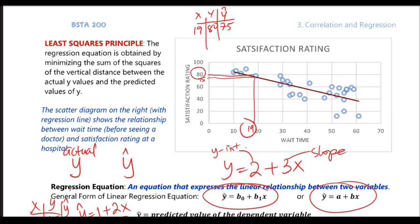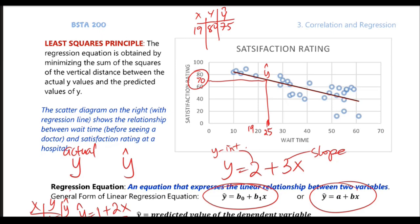For several reasons — sometimes we want to predict something. For example, at 25 minutes on the x-axis, we don't have anybody who actually waited 25 minutes. We can trace that to the line and estimate that a person who waited 25 minutes would rate the doctor's office about 70. So that is your y-hat. You don't actually have someone who waited 25 minutes. That's why we obtain the equation of the line and use it for prediction.